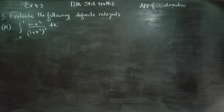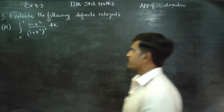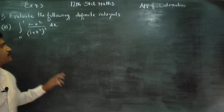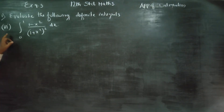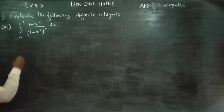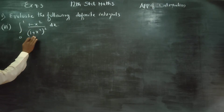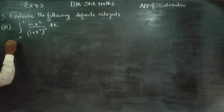Dear 12th standard students, in exercise 9.3, sum number 1, evaluate the following integrals. The sixth is: integrate (1 minus x square) by (1 plus x square) dx.